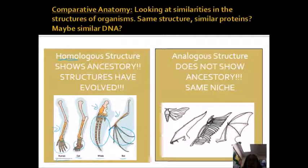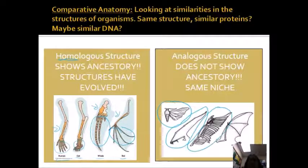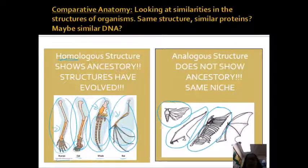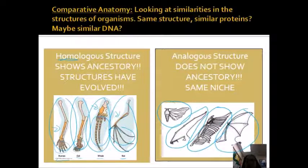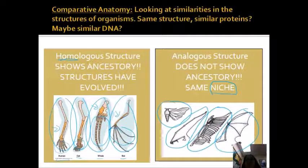An analogous structure is the opposite of a homologous structure. Homologous structures have the same structure but different function. Analogous structures have the same function but a different structure. Since these organisms are made up of completely different proteins, it's unlikely they changed due to random mutations from a common ancestor. What could have happened is that these organisms occupy the same niche — in this case, flying. So they do not have a close common ancestor, but they do occupy the same niche and have the same behavior.